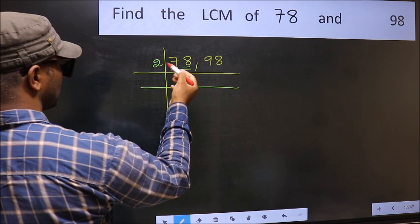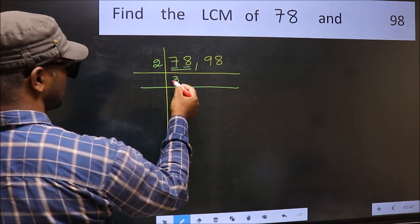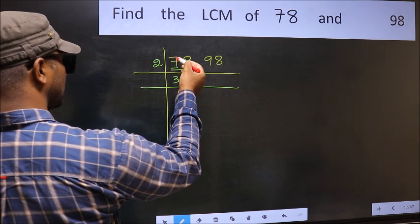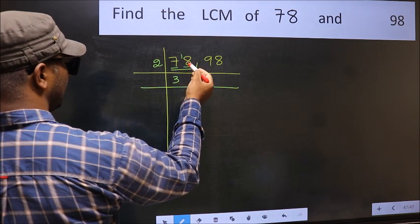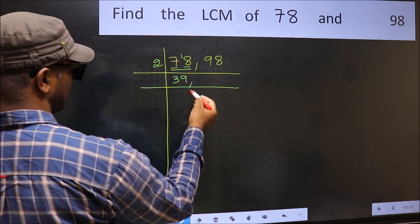First number 7. A number close to 7 in 2 table is 2 threes, 6. 7 minus 6, 1. 1 carried forward 18. When do we get 18 in 2 table? 2 nines, 18.